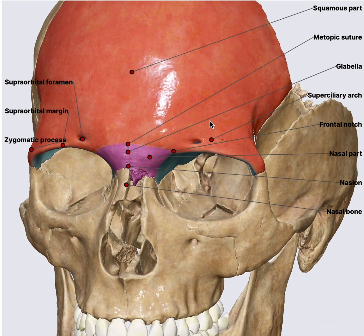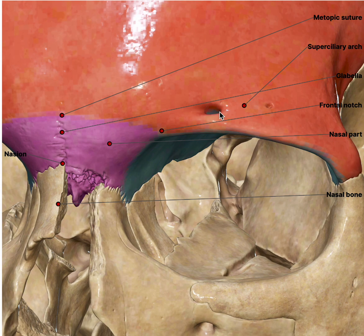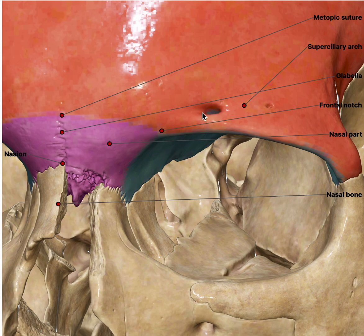These two are neighbouring structures and quite confusing — the supraorbital foramen and the supratrochlear notch. The reason it is called supratrochlear is because it is above the trochlea of the superior oblique muscle. The trochlea is essentially the pulley portion of the muscle. Both structures give exit to branches of the frontal nerve.